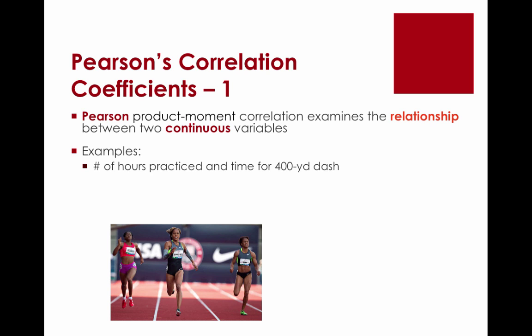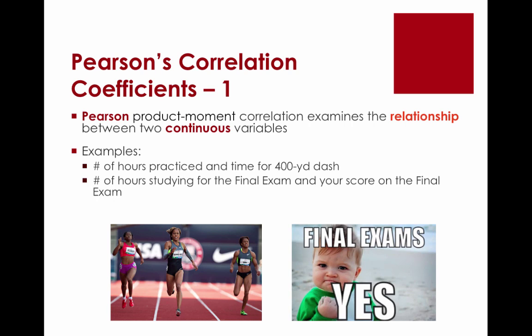If you think that the more you practice, the faster you work, that means the slower the time. Here's another one: the number of hours you study for the final exam and what you actually get as your score on the final exam. Both of these variables are interval-ratio but continuous in nature. These are examples of when we're going to use Pearson's product-moment correlation coefficient, also known as Pearson's correlation coefficient.